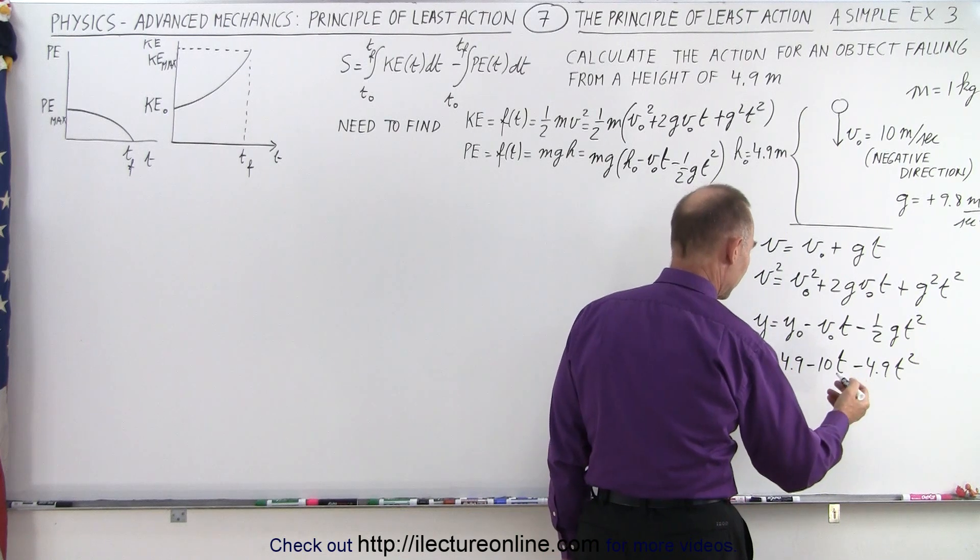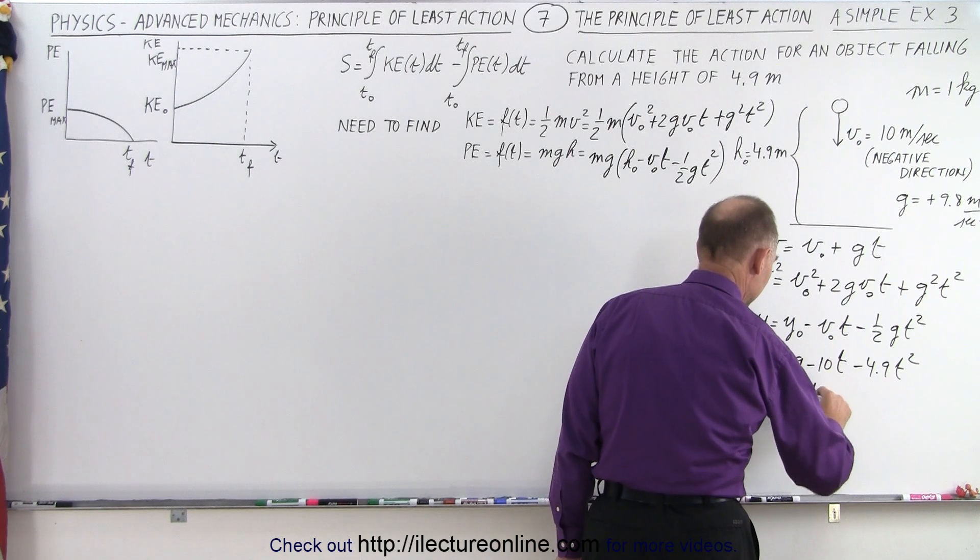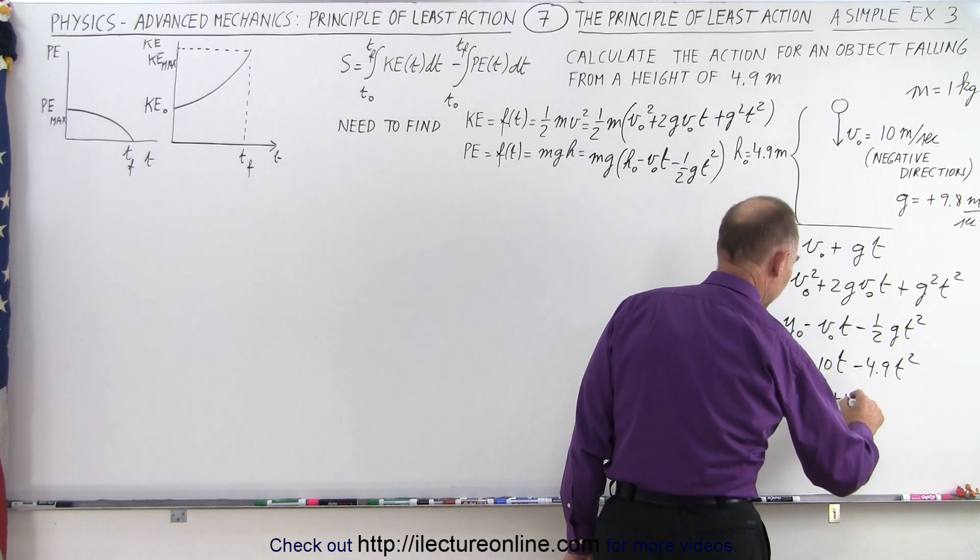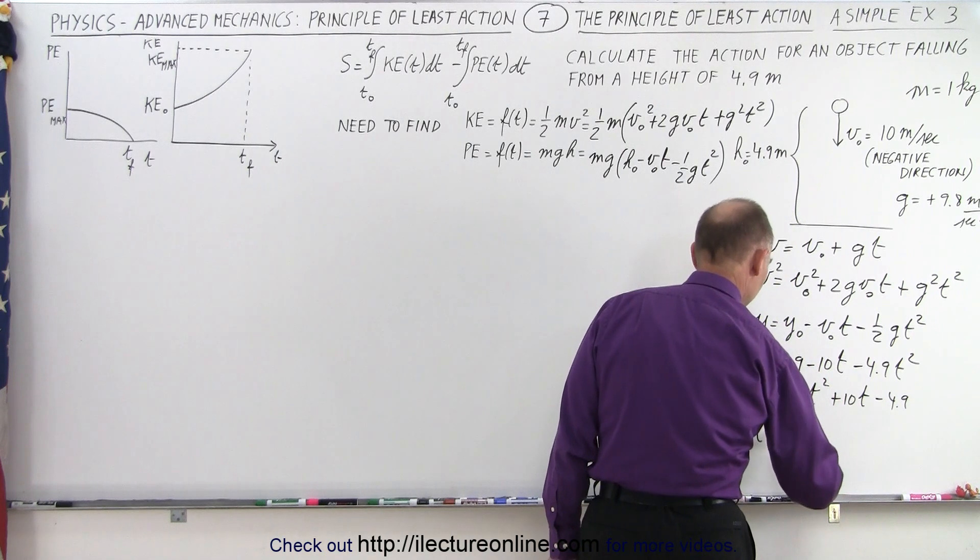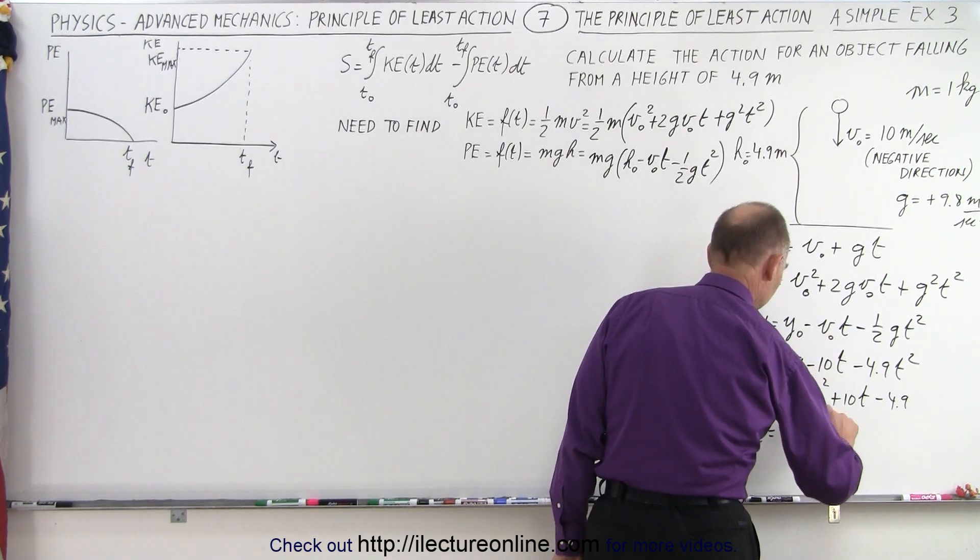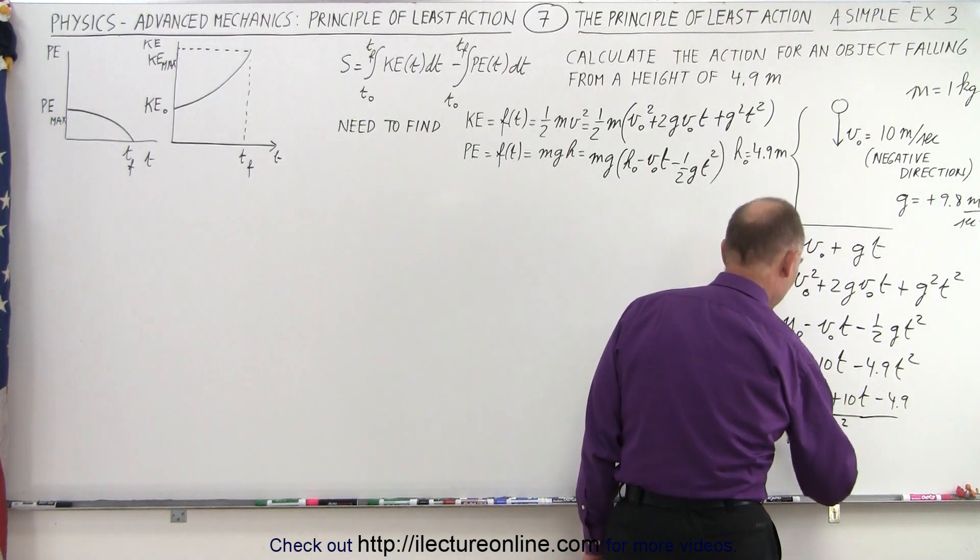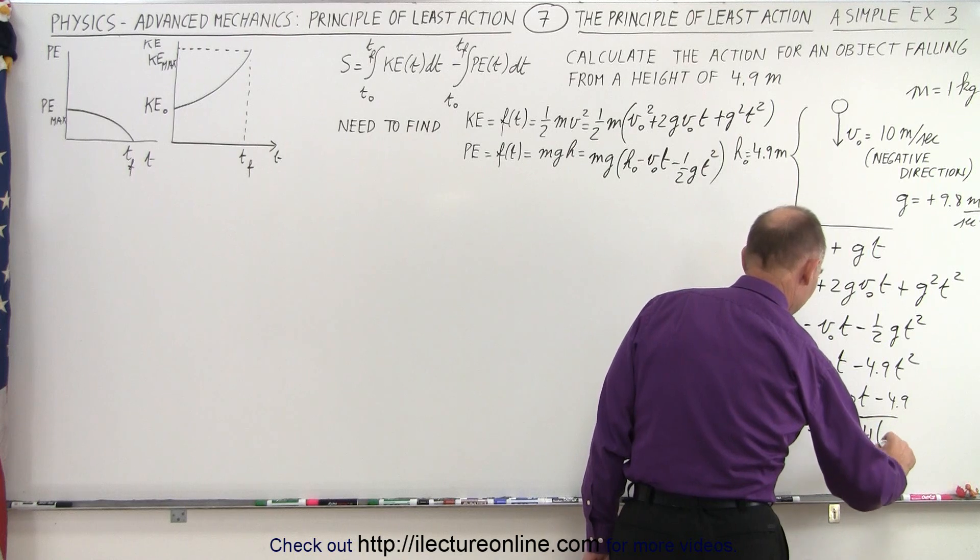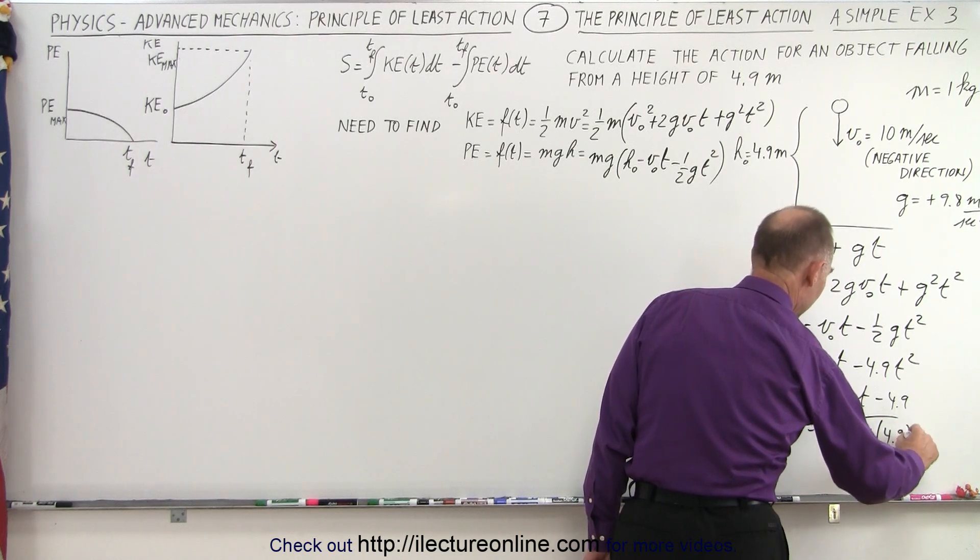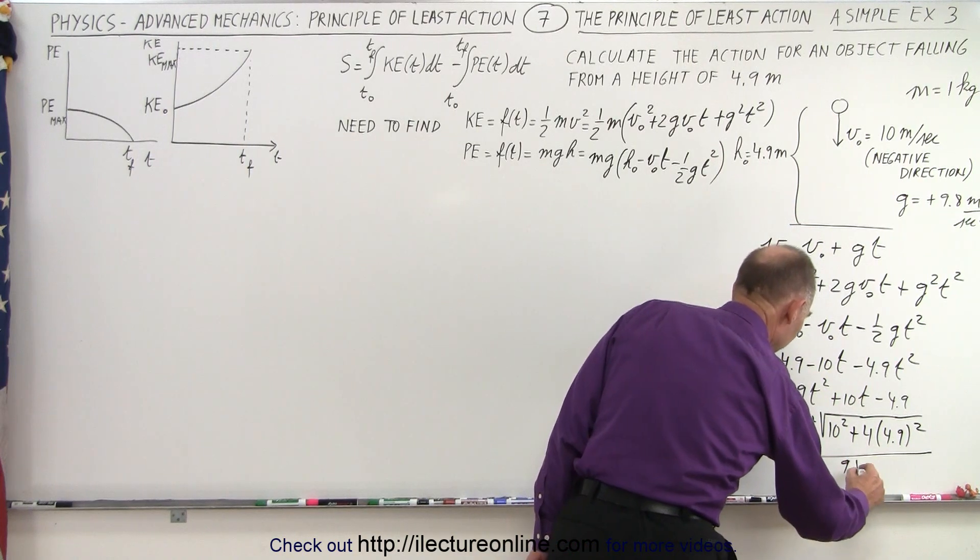First let's make everything positive. So I mean the first term positive, so this is equal to 4.9 t squared plus 10 t minus 4.9. So t is equal to minus 10 plus or minus the square root of 10 squared plus 4 times a times c, all divided by 2a, which is 9.8.